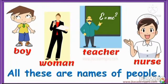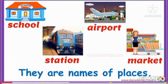Let's understand it with few examples. First of all, read the first word — that is boy. Next: woman, teacher, nurse. All these are names of people. Next is school, station, airport, market. They are names of places.